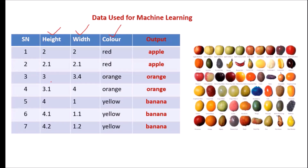Now here one thing you have to understand: features mean dimensions. If there are 3 features, you have 3 dimensions. If you have 100 features, there are 100 dimensions. So the aim of principal component analysis is to keep only useful features and delete unwanted features which carry redundant information. That means we are actually reducing the dimension of our data, which is why PCA is used for dimensionality reduction — reducing the number of features so that processing will be easier and memory requirement will also be reduced.